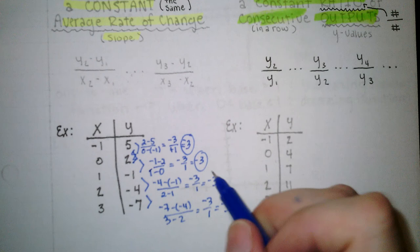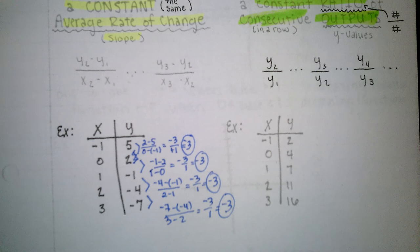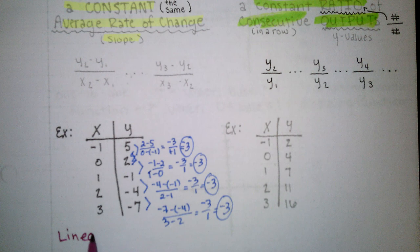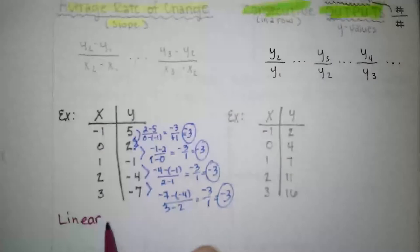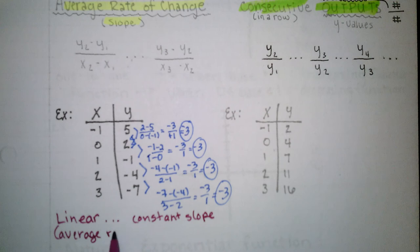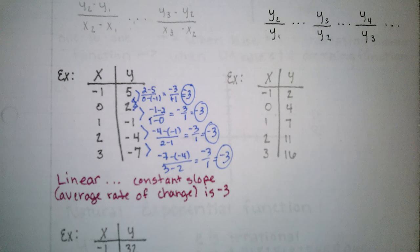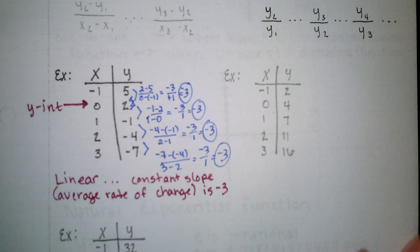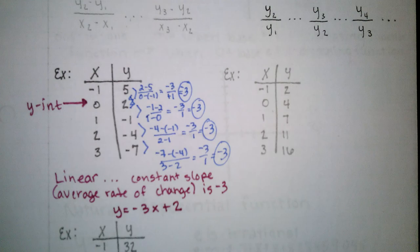So this is telling us that our slope or our average rate of change between each consecutive ordered pair is negative 3. So that tells us that we have a linear relationship. We have linear because we have a constant slope or average rate of change. So our slope is negative 3. And we can tell from the data we're lucky because they gave us the y-intercept here of 0, 2. So we can actually write that equation: y equals negative 3x plus 2.